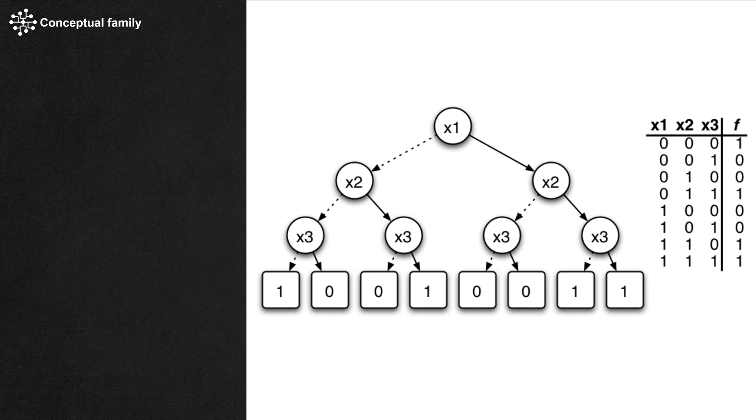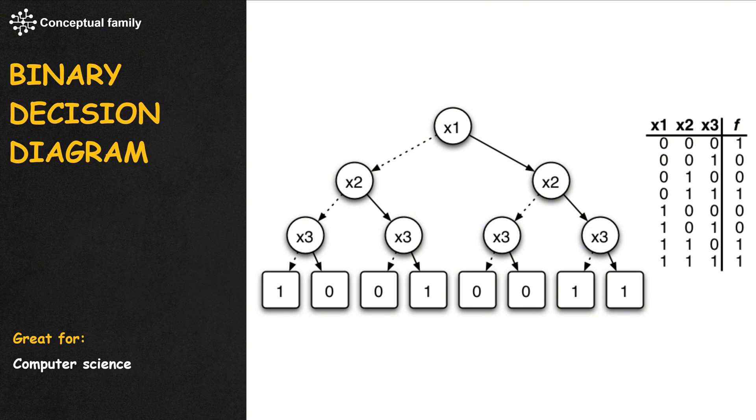When a dendrogram chart is used in the computer science world, where every decision has two alternatives, we have a binary decision diagram.